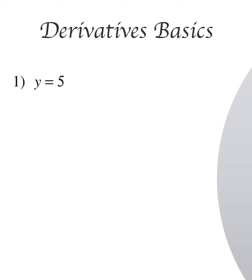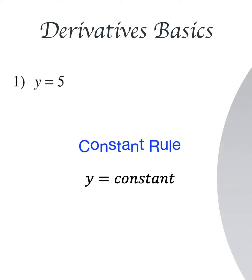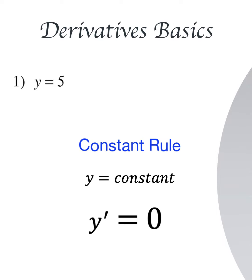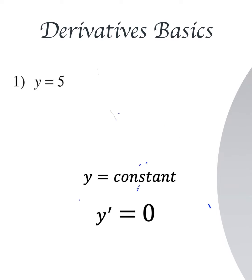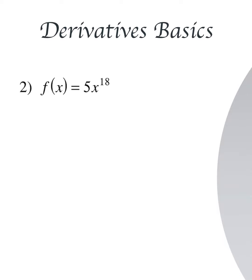Hello and welcome to Math for Fun. Let's do some practice on derivatives. Here we have y equal to 5. According to the constant rule, when y equals a constant, the derivative y prime is going to be equal to 0. So y equals 5 here, so we can say dy/dx is equal to 0. Straightforward — you don't need to think about it.